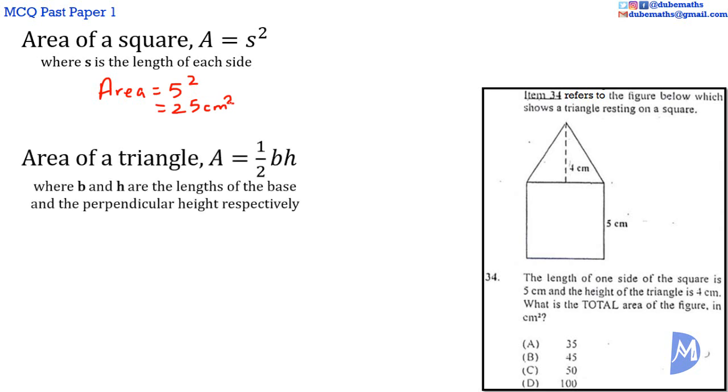The area of a triangle is equal to half base times height. We are given that the height equals 4 centimeters, and since all sides of a square are equal, the base of the triangle equals 5 centimeters. Therefore, the area of the triangle equals 1/2 times 5 times 4. 5 times 4 is 20, half of 20 is 10, so 10 centimeters squared. Thus, the total area equals 25 centimeters squared plus 10 centimeters squared equals 35 centimeters squared. The answer is A.